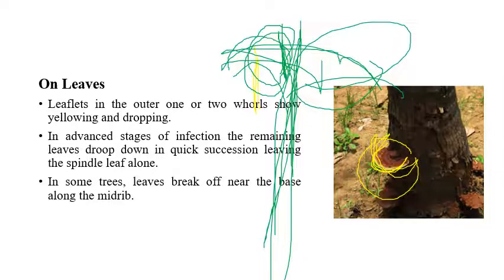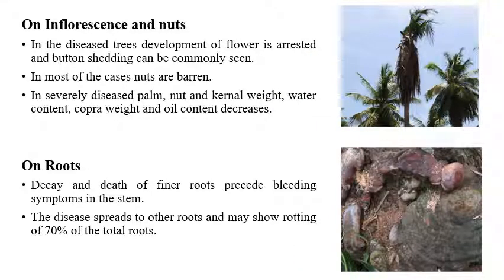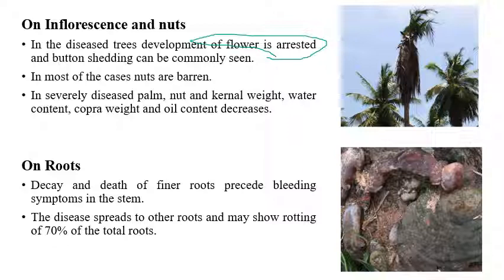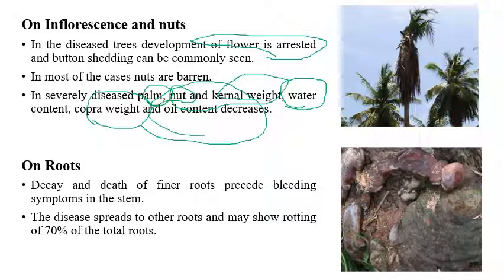Some trees show leaf breakage at the base along the midrib, where leaves may break into pieces at the midrib region. On inflorescence and nuts, important symptoms include button shedding, arrested flowering, and yellowing of leaves. Button shedding is very common. In severe cases, palm content — number of nuts, kernel weight, water content, copra weight, and oil content — are drastically reduced.